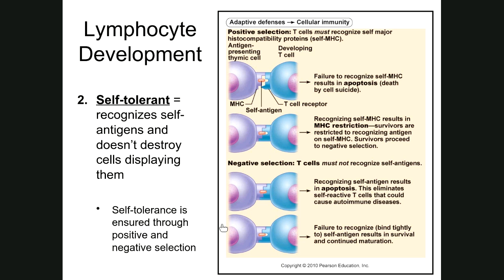What we want in negative selection is a developing cell that recognizes the class I MHC — binding to it like a lock and key — but does not bind like a lock and key to the self-antigen. So it won't activate against cells displaying self-antigens. Basically, through this self-tolerance process, we want our developing lymphocyte to know where to look for self-antigens — it can recognize class I MHC — but it doesn't react against self-antigens. It can recognize where they are, but it doesn't react against them.